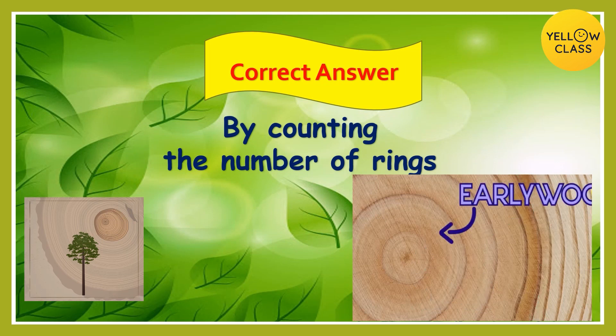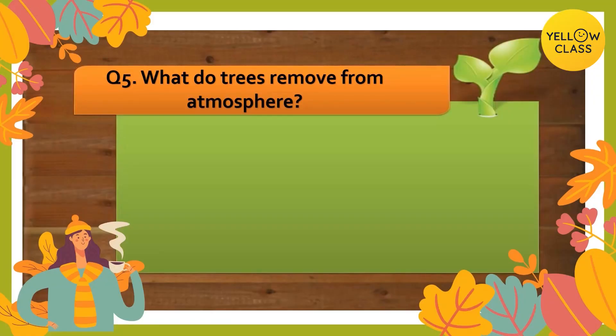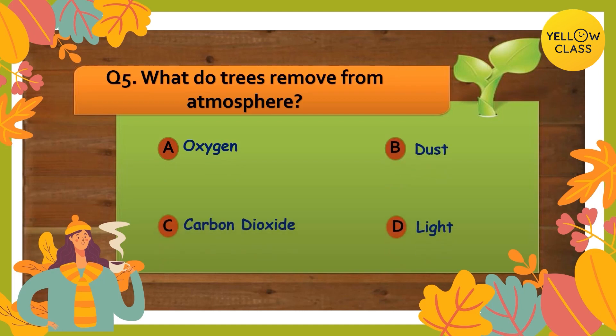Let's move on to the last question of the quiz — your chance to redeem yourself! Question number five: what do trees remove from the atmosphere? Your options are: option A oxygen, option B dust, option C carbon dioxide, and option D light. Your time starts now!